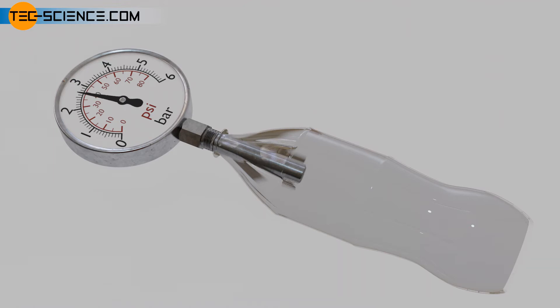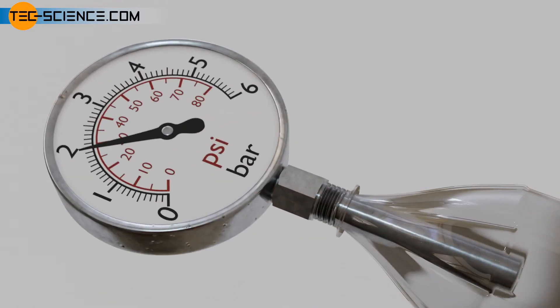The higher the temperature of the liquid, the stronger it tries to expand and the stronger the pressure increase will be at a constant volume. This principle can therefore be used to determine the temperature from the pressure rise on a calibrated scale.